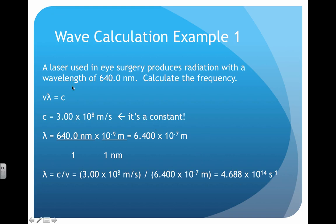In terms of wave calculations, most are pretty basic. Let's say we're talking about laser eye surgery using radiation with a wavelength of 640 nanometers — let's calculate the frequency. Using our wave equation, c is a constant. Lambda is given in nanometers, but you need to convert it to meters for it to work with the equation. This conversion factor represents the number of meters in a nanometer. Once we have our wavelength in meters and our speed of light, we substitute and solve for frequency to get our answer.